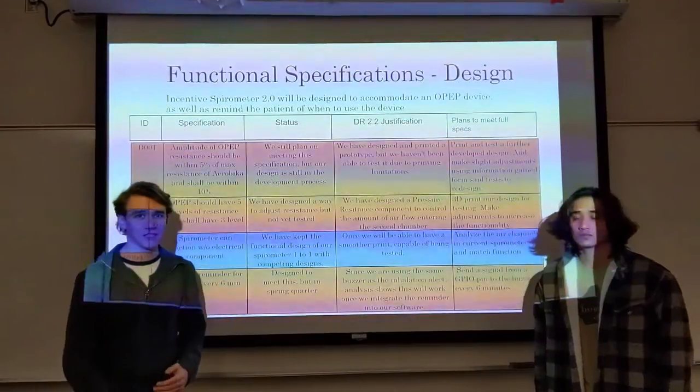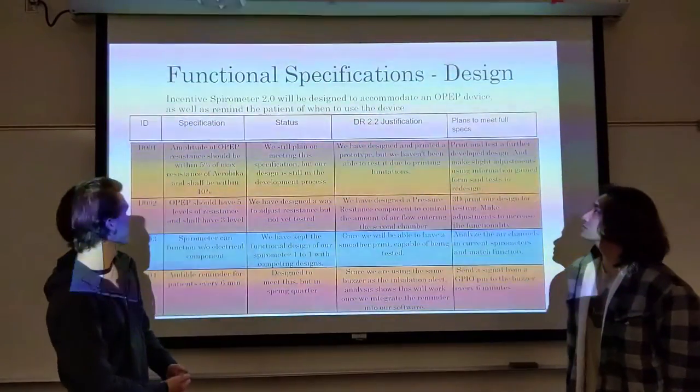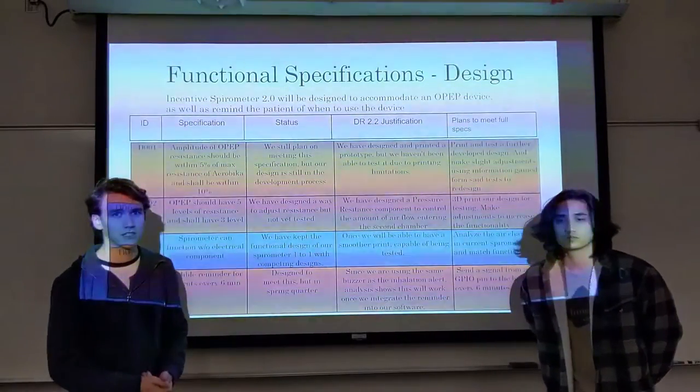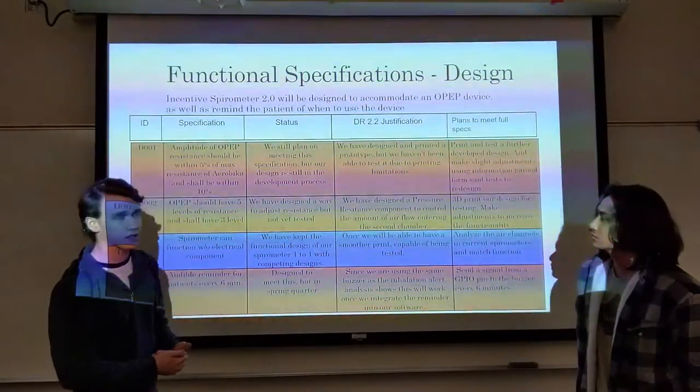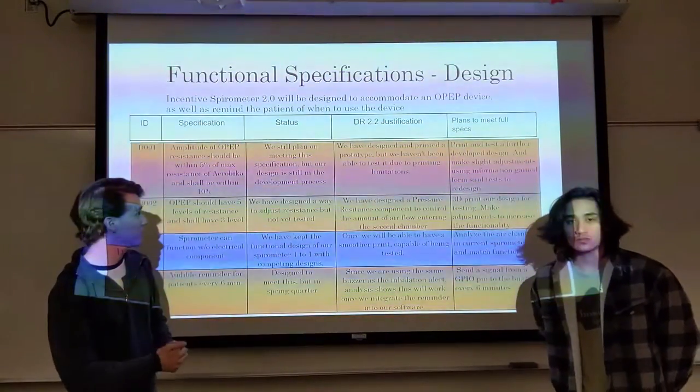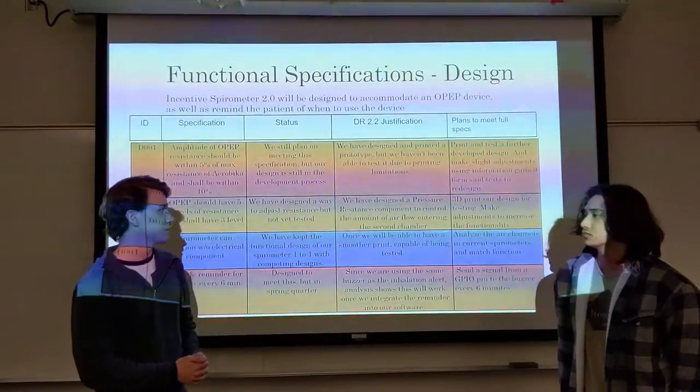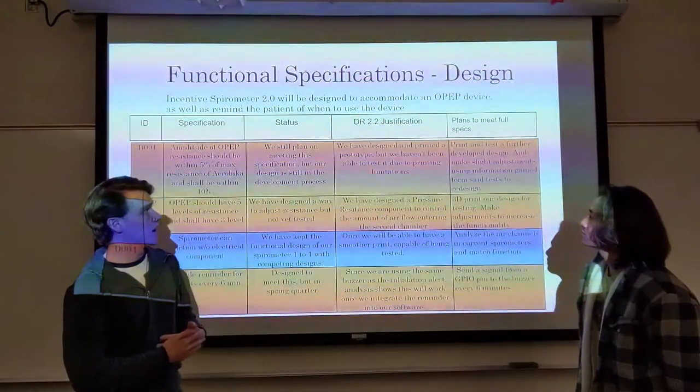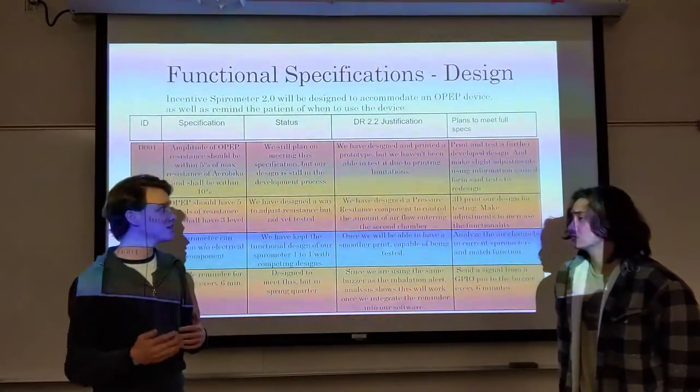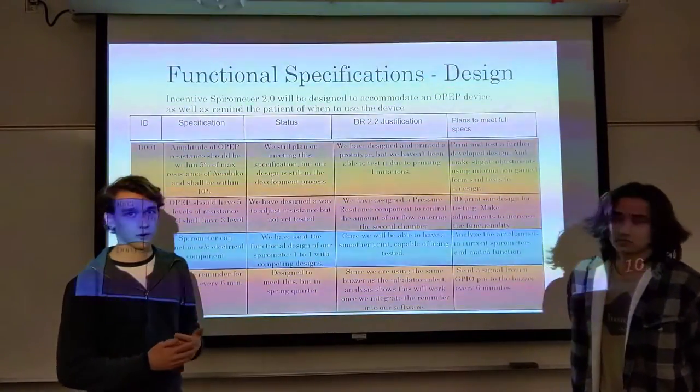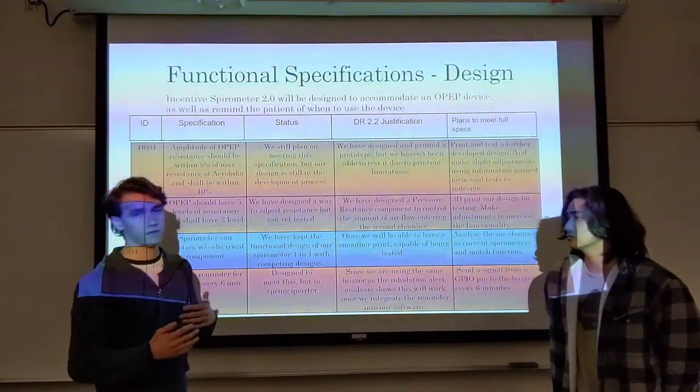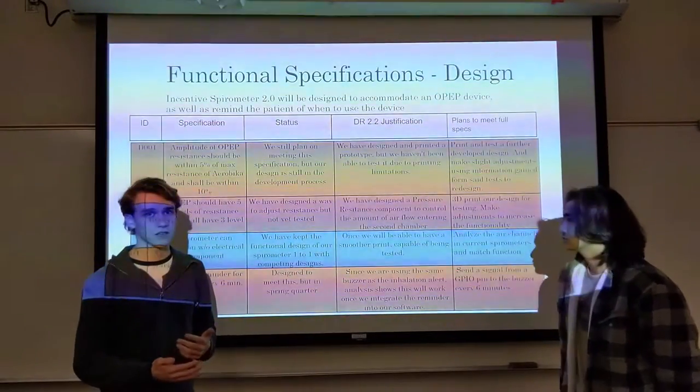For our functional specifications in terms of design, the first one, D1, refers to the amplitude of the OPEP and how similar it is to the resistances that the aerobica provides. Our spec is that it shall be within 10% of the resistance of the aerobica. We still plan on meeting this specification. However, due to printing limitations, we have not been able to get a solid test done for our prototype.